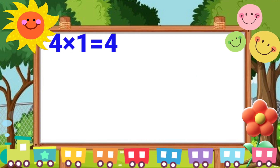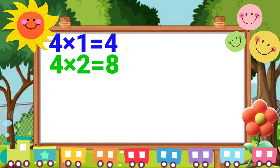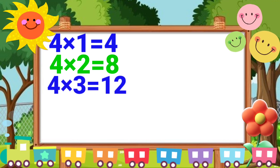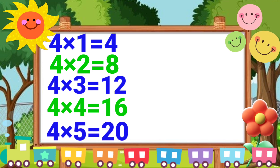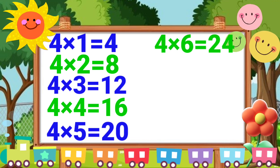Four ones are four. Four twos are eight. Four threes are twelve. Four fours are sixteen. Four fives are twenty. Four sixes are twenty-four.